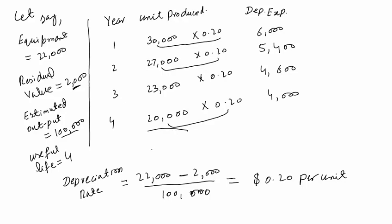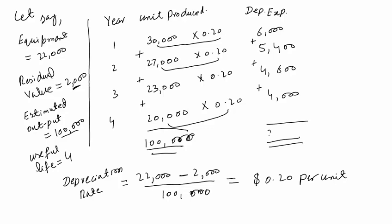If we add all these numbers, the total depreciation expenses add up to 20,000, which equals the total depreciable amount for the unit of output. The total depreciation expense is 20,000.